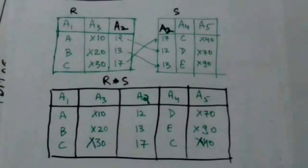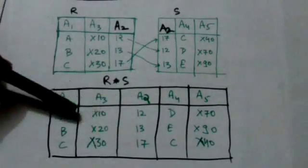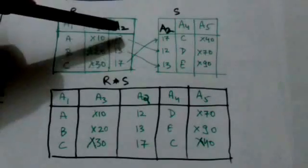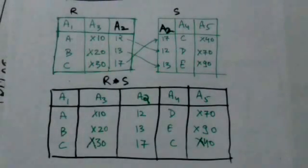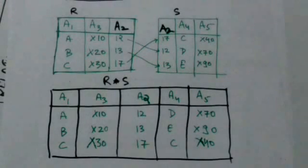For example, this tuple of resulting relation is formed by combining this tuple of relation R with this tuple of relation S, because they have same value for attribute A2, and then duplicate attribute is removed.